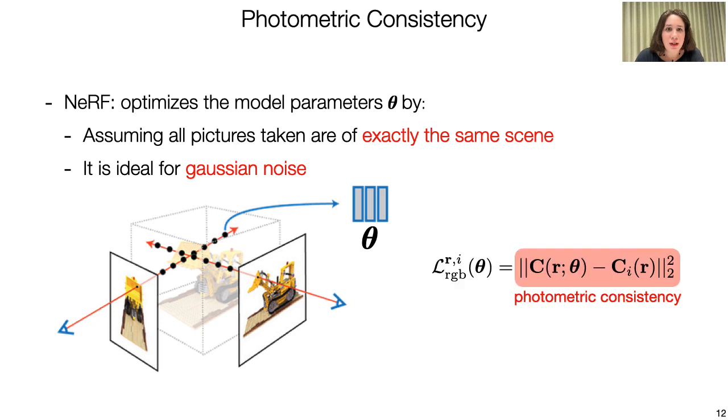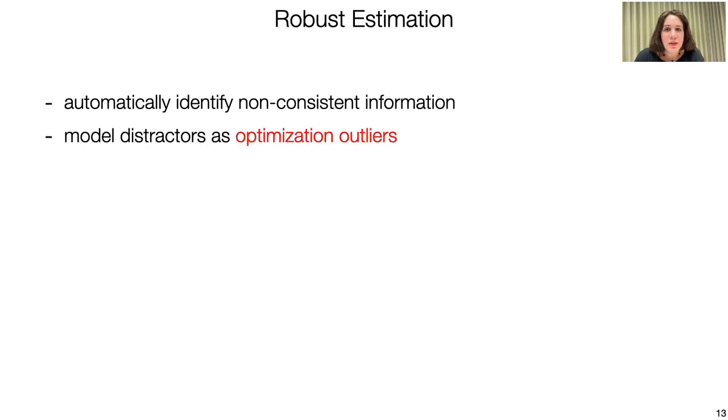In particular, the L2 reconstruction loss is sensitive to outliers like a transient object or a shadow cast by the person capturing the scene. So, the obvious solution is to use a robust loss which can model distractors as optimization outliers.